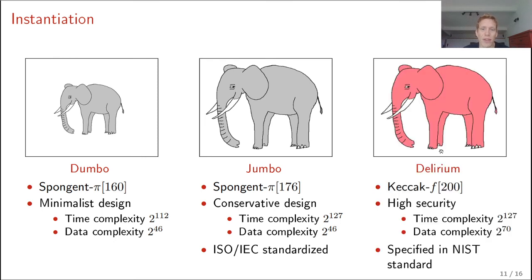And finally, we have Delirium. And Delirium is instantiated with Keccak-f[200]. And this gives a high security variant. So we get security up to a time complexity of 2 to the 127 and a data complexity of 2 to the 70. And Keccak-f[200] is specified in the NIST standard. It apparently is not NIST standardized, but it is specified in the NIST standard.